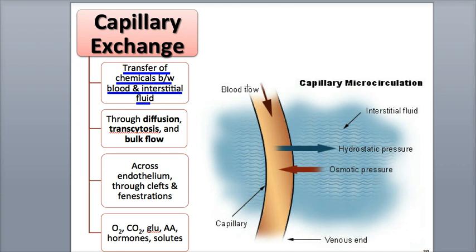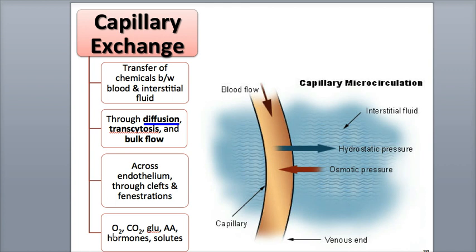This exchange is carried out through three processes: diffusion, transcytosis, and bulk flow. Simple diffusion is the most important method of capillary exchange, used to transfer many chemical substances and solutes, such as the respiratory gases oxygen and carbon dioxide, nutrients such as glucose and amino acids, and the endocrine hormones and other solutes.